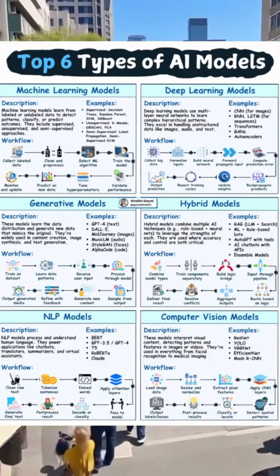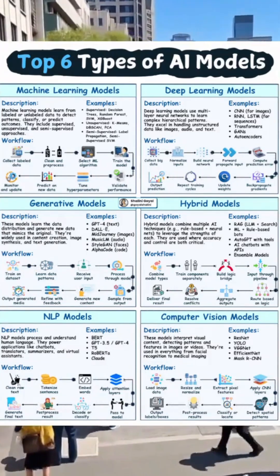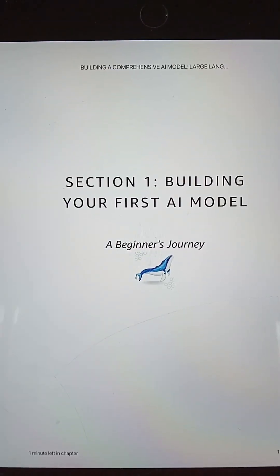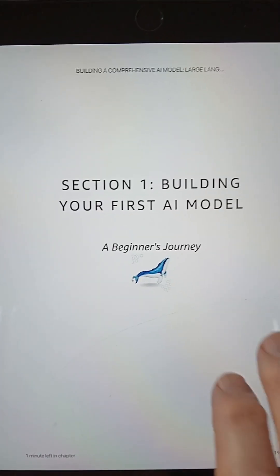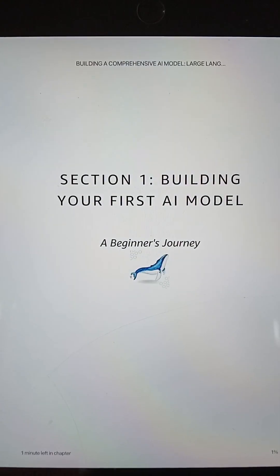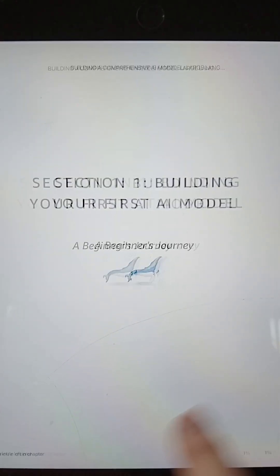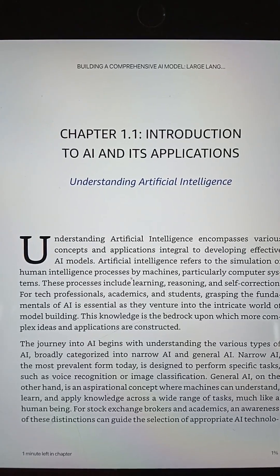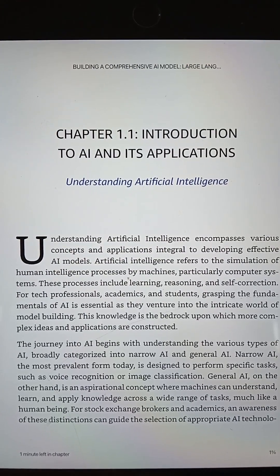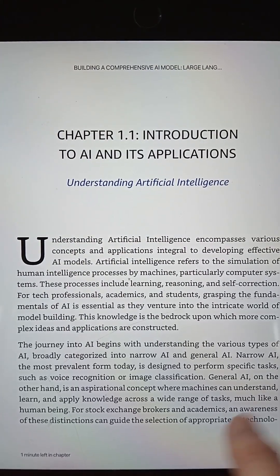The book is organized into four sections. Section one is all about building your first AI model, including problem framing, data prep, and algorithm pick.